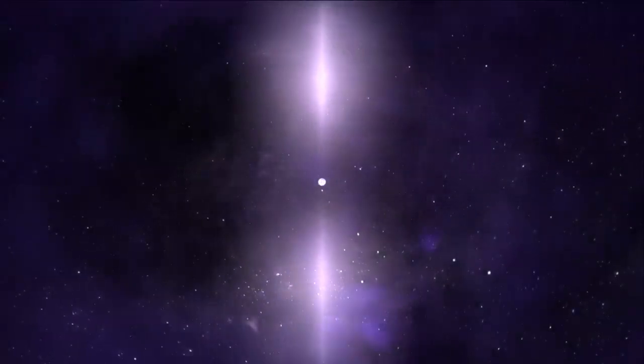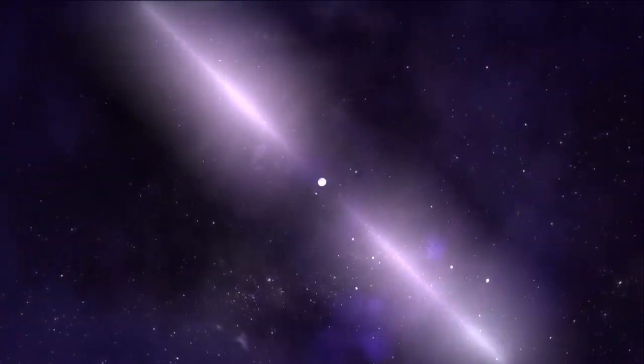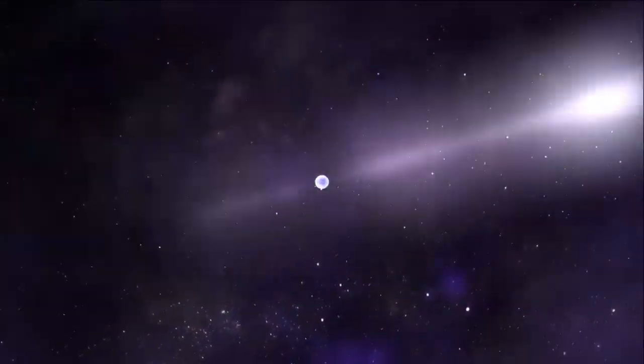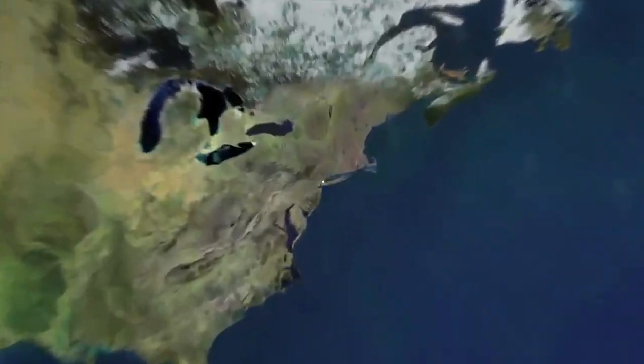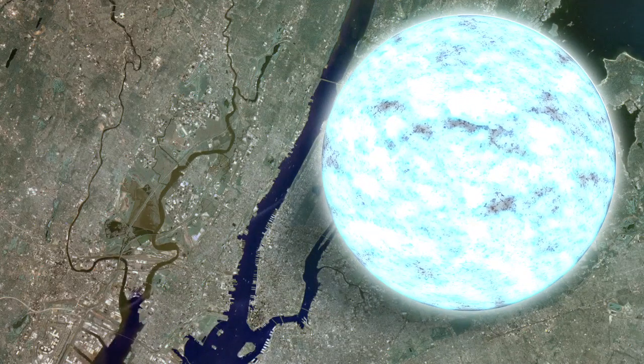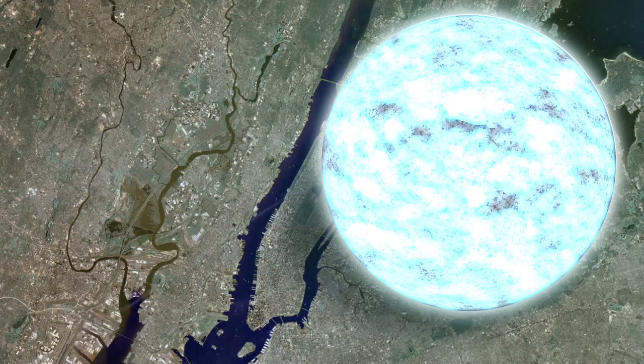A pulsar is a rapidly spinning neutron star, which is the small, incredibly dense remnant of a much more massive star. A teaspoon of matter from a neutron star weighs as much as Mount Everest, and a neutron star is so compact that a ball about 15 miles across contains more matter than our sun.